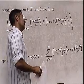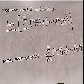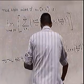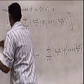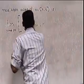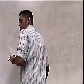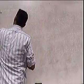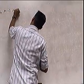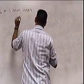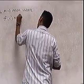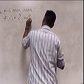Now let's do an example. Find the area under f of x equals x cubed on the interval 2 to 5. I'll apply that general formula now.